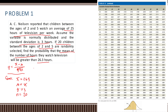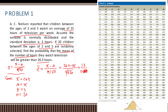Substituting into the formula: z equals 26.3 minus 25, over 3 divided by the square root of 20. The numerator is 1.3 and the denominator is 0.671, which gives us z equals 1.94.